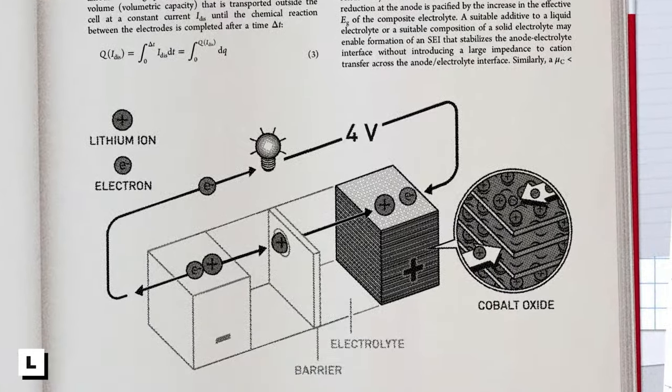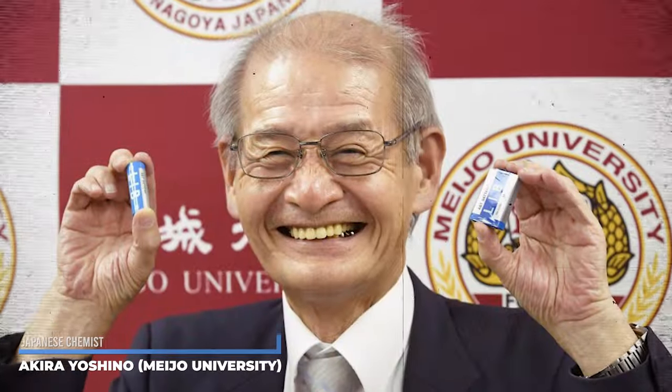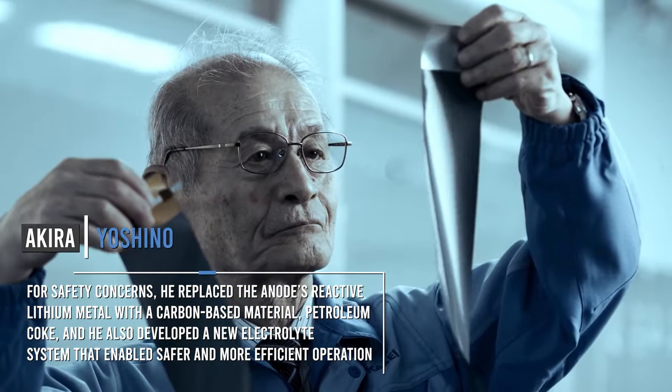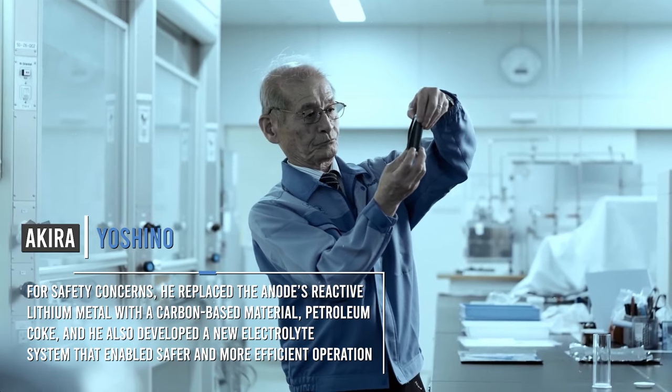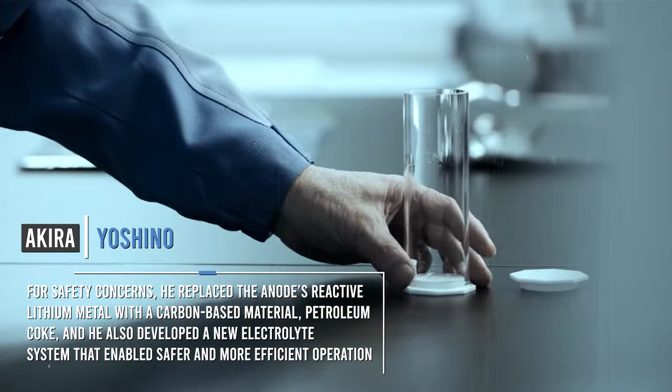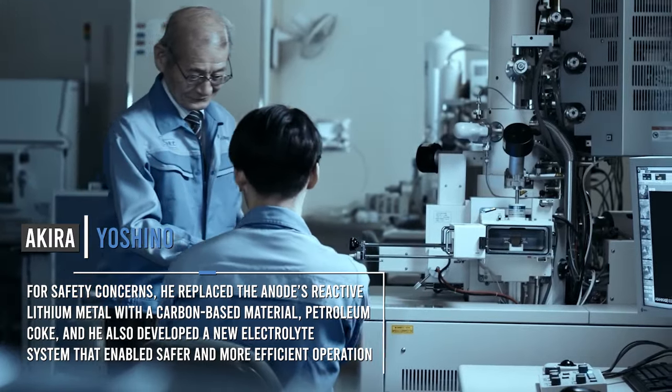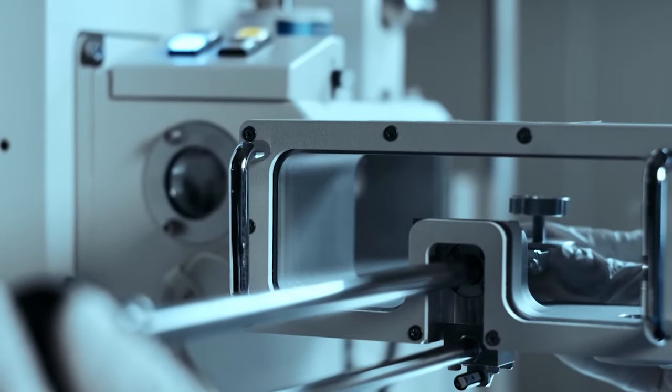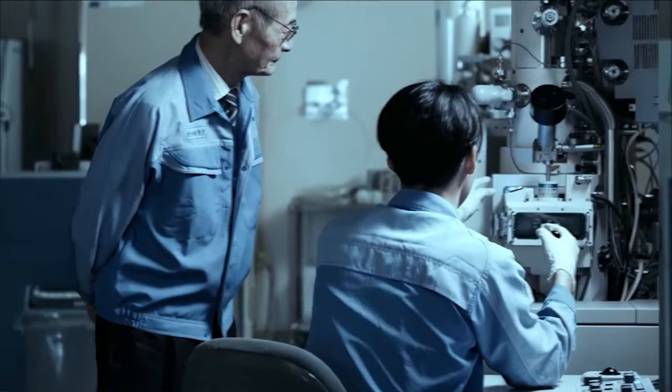A few years later, in 1985, Akira Yoshino from Meho University made a groundbreaking move. To address safety concerns, he replaced the anode's reactive lithium metal with a carbon-based material, petroleum coke, and he also developed a new electrolyte system that enabled safer and more efficient operations. This switch not only made the battery significantly safer, but also stabilized its performance.